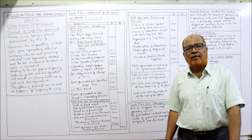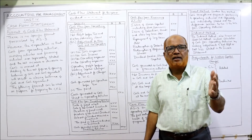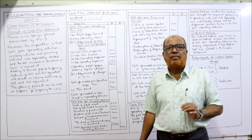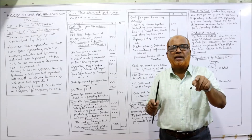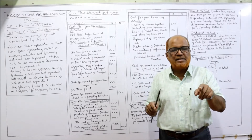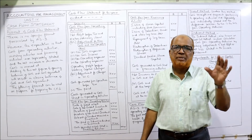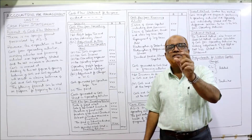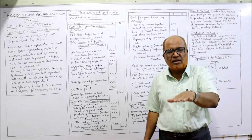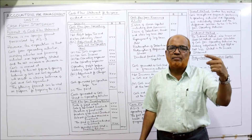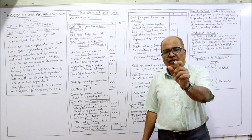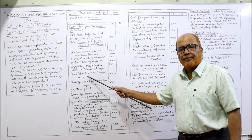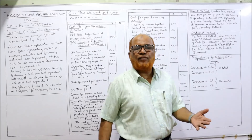We compare the current assets and current liabilities from last year's balance sheet with the current year's balance sheet — for example, inventory, debtors, bills receivable, creditors, and bills payable. We compare each item and find that some current assets are increasing, some are decreasing, some current liabilities are increasing, and some are decreasing. Whatever increase or decrease exists is then adjusted here. The rule of adjustment for working capital changes is as follows.